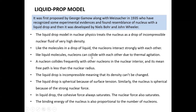Like liquid molecules, nucleons can collide with each other and undergo thermal agitation. Nucleons collide frequently, and therefore nucleons within the nuclear interior have a mean free path less than the nuclear radius — they keep colliding within it. The liquid drop is incompressible, meaning its density cannot change much. It is spherical due to surface tension, and similarly the nucleus is spherical due to the strong nuclear force, which keeps it bounded in a rounded shape.